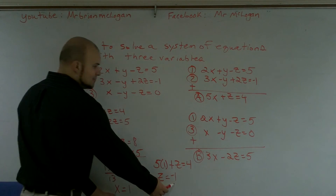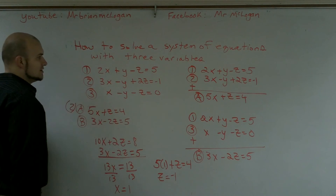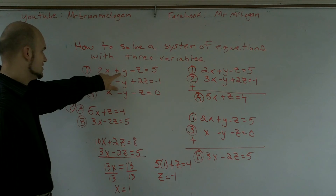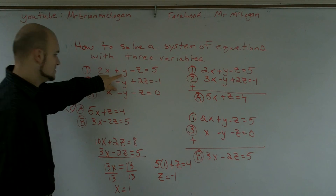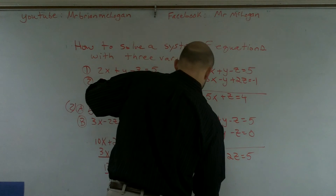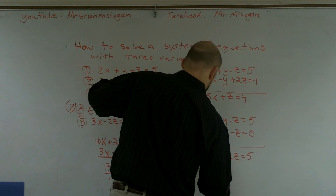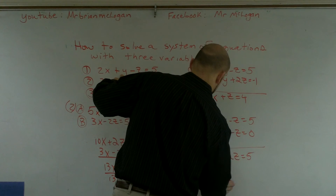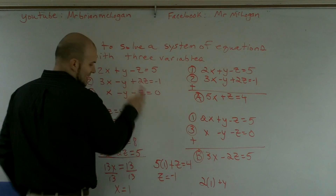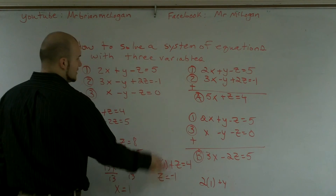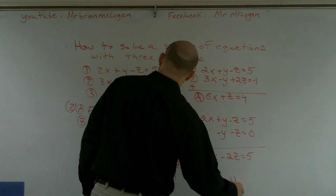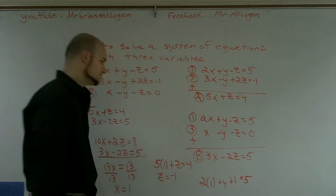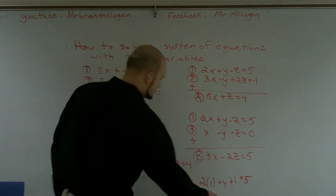Then I plug both x and z into one of my original equations to solve for y. I'll use the equation with the positive y: two times one plus y minus a negative one equals five, which gives two plus y plus one equals five, so three plus y equals five, and y equals two.